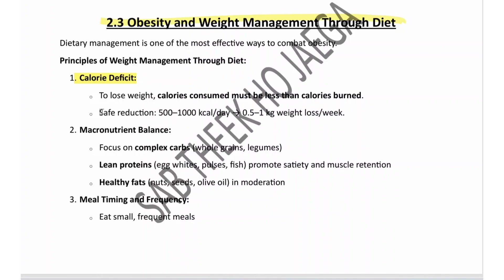A safe reduction is 500 to 1000 calories per day, leading to approximately 0.5–1 kg of weight loss per week. Second is macronutrient balance — focus on complex carbs like whole grains and legumes, lean proteins like egg whites, pulses, and fish for muscle retention, and include healthy fats such as nuts, seeds, and olive oil.